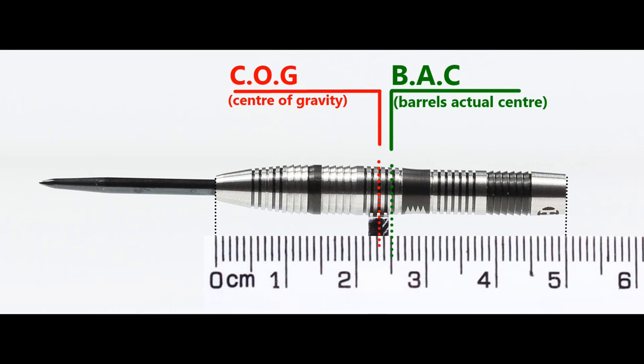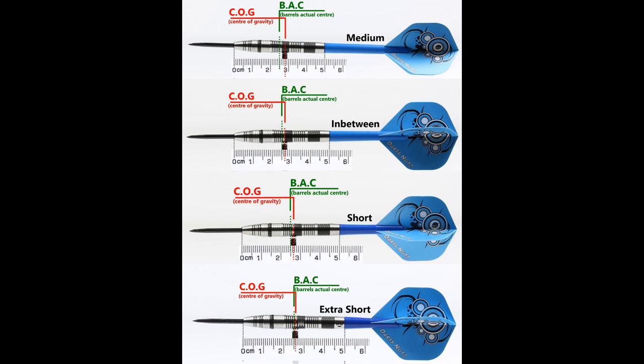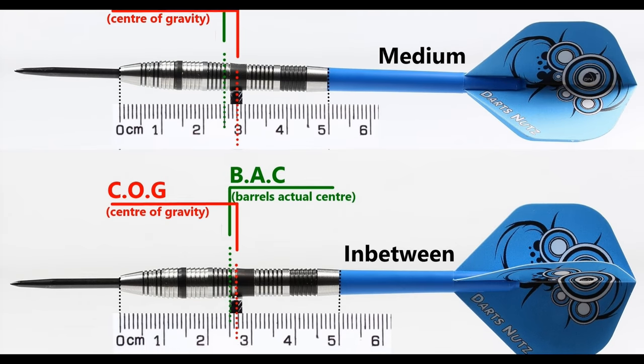With nothing attached, the balance is just front of center, and with the supplied setup it moves behind. This is the balance with medium, in between, short, extra short stems and standard flights.